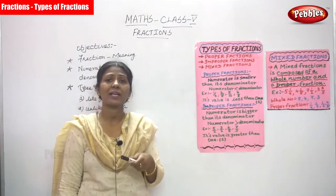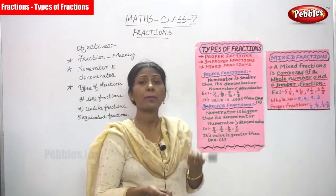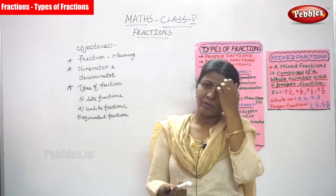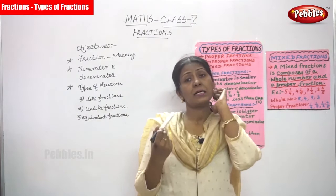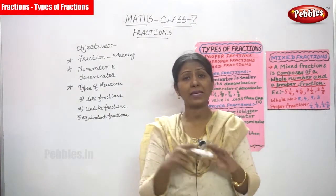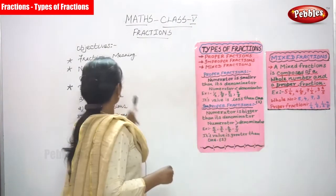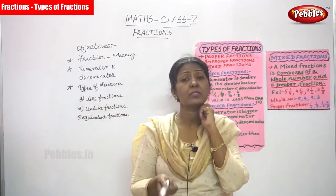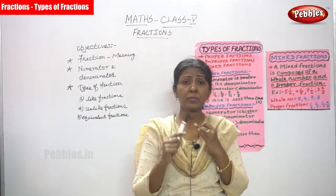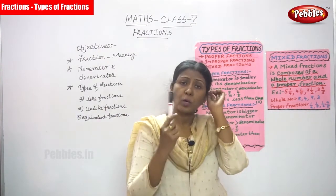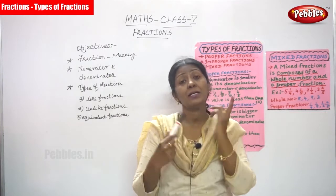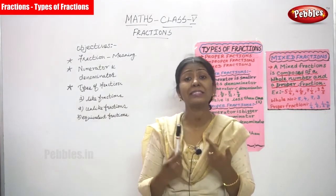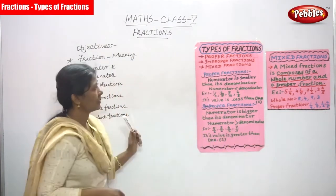I have given fraction examples: 1 by 2, 2 by 5, 3 by 6, 4 by 9, 8 by 6, 10 by 12 — all these are examples of fractions. A fraction is made up of two numbers: the top number is called the numerator and the bottom number is called the denominator.